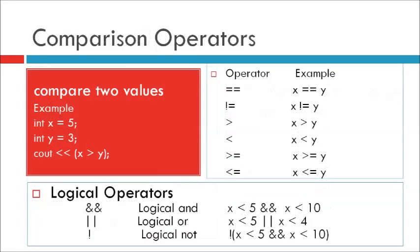Now let us see comparison operators. Comparison operators are used to compare two values. Note: the return value of a comparison operator is either true (1) or false (0). In the below example, we use the greater than operator to check if 5 is greater than 3: integer x = 5, integer y = 3, cout << (x > y), which returns 1 (true) because 5 is greater than 3. There is a list of all comparison operators. Double equal to (==), name: equal to — used with if conditions, for example: if (x == y), used to check x with y.